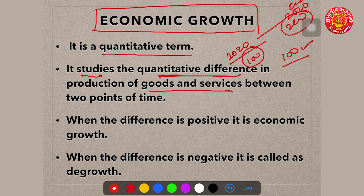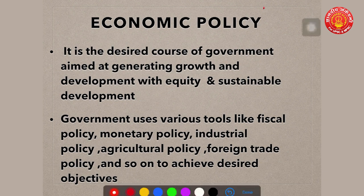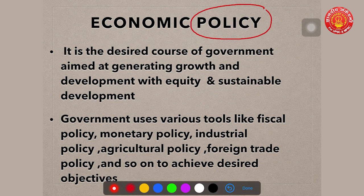When the quantitative difference between two points in time is positive, it is called economic growth. When this difference is negative, it is referred to as de-growth. Remember these two terms: economic growth for a positive difference, and de-growth for a negative difference in production between two points of time.